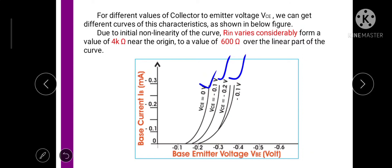Here if we see the nature of curve then it is clear that the initial curve is non-linear and finally it is going to become linear one. So due to initial non-linearity of the curve the input resistance varies considerably from the value of 4 kilo ohm near the origin whereas this value may decrease up to 600 ohm over the linear part of the curve. The exact value of input resistance depends on the location from where the value of slope is taken.